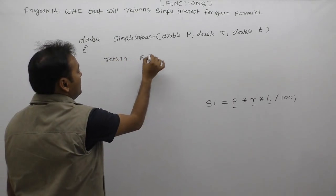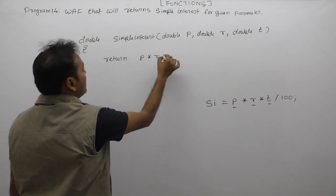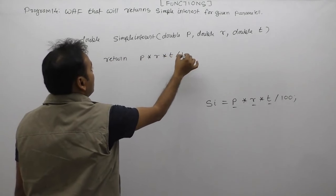I will write down as a return expression: return P multiply by R multiply by T divided by 100.